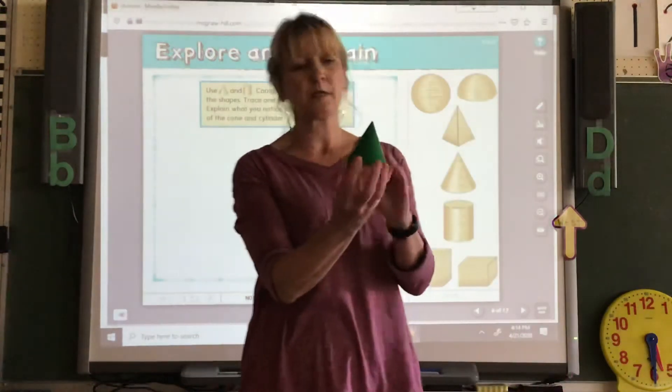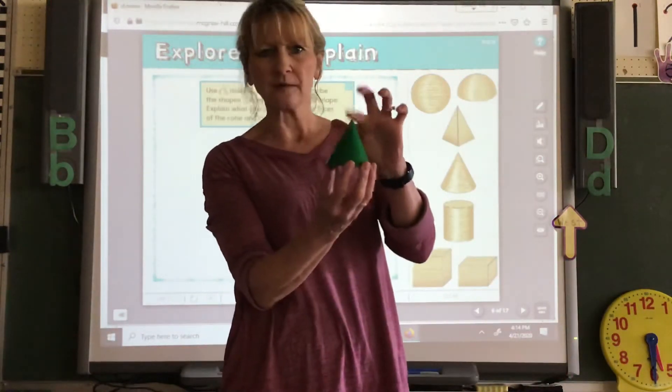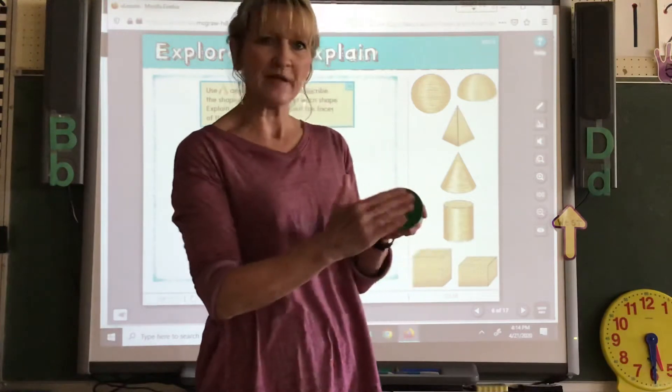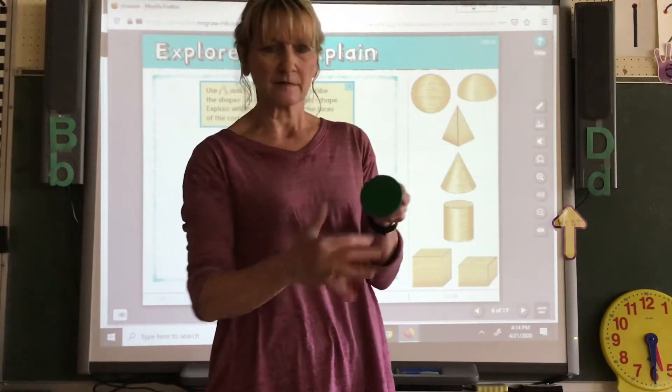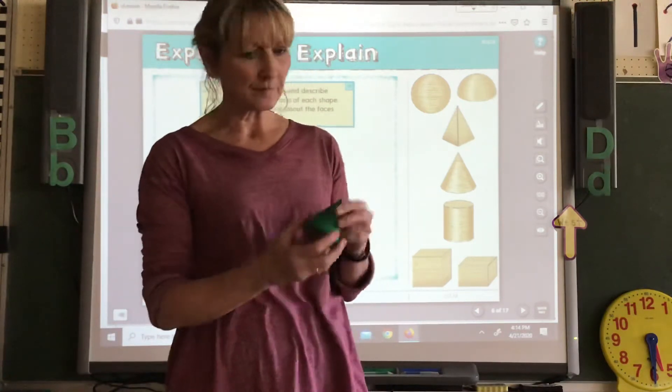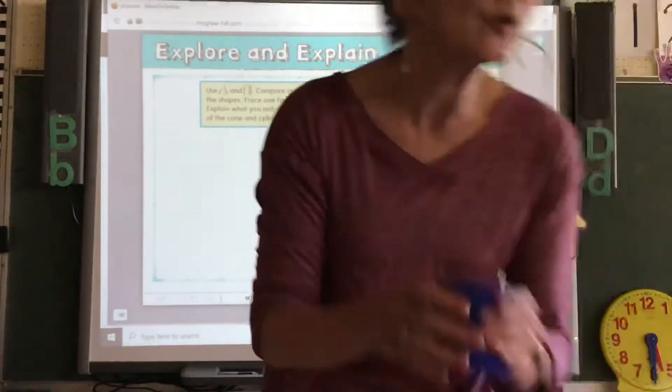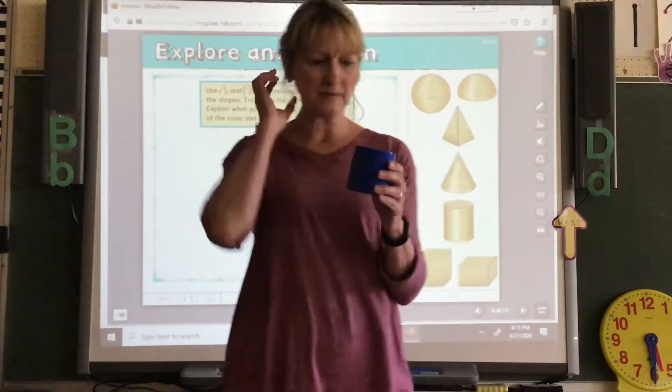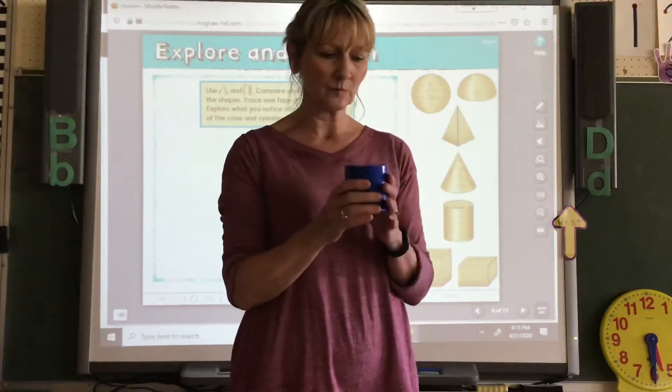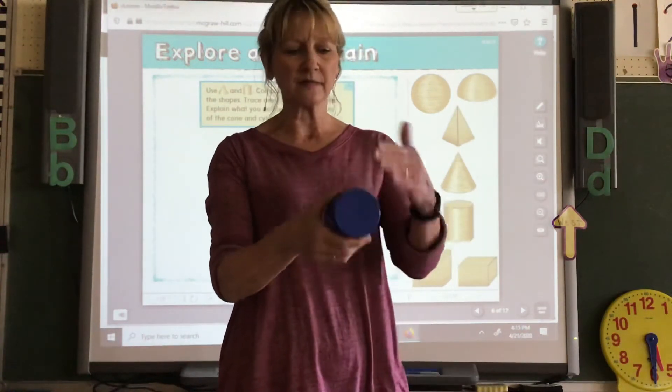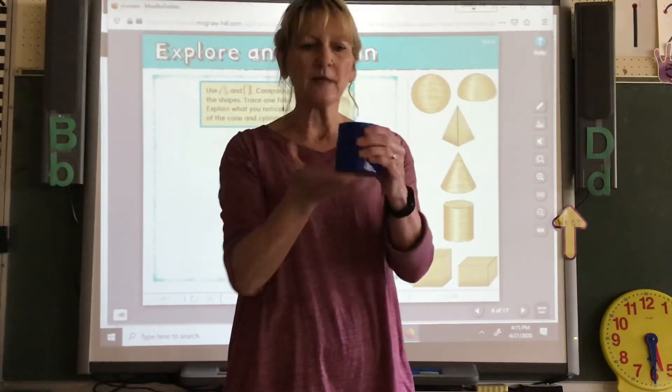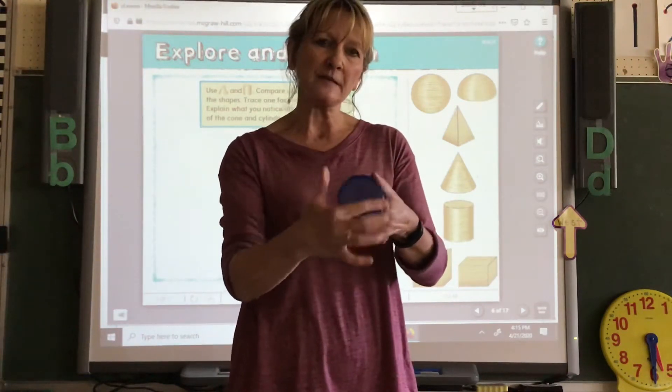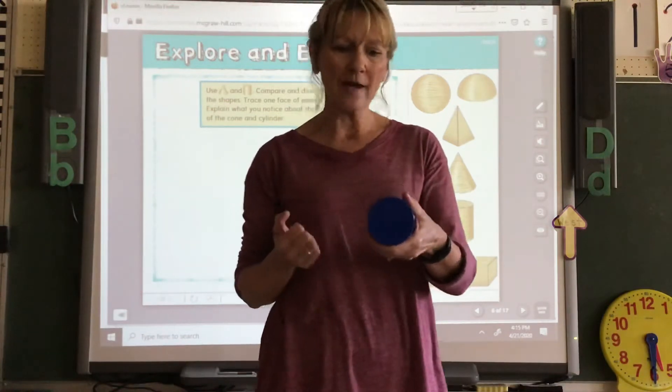The cone has one vertex and it has one face. Right there. What shape is its face? Right, it's a circle. So, okay, the cylinder doesn't have any vertices at all, or a vertex, but it has two faces. It's got this one and this one. And what shape is this face? It's round.